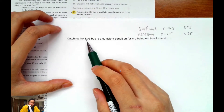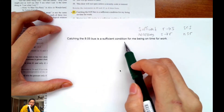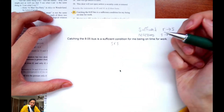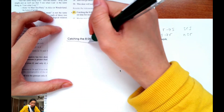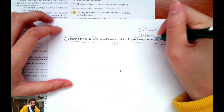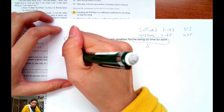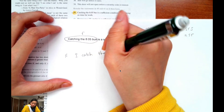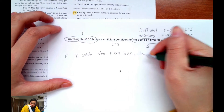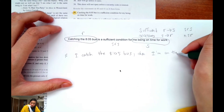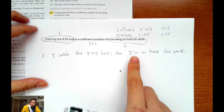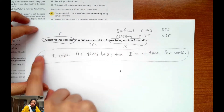Here they say: catching the 805 bus is a sufficient condition for me being on time for work. Sufficient means SRS — r implies s. So catching the bus is r, and me being on time for work is s. Therefore: if I catch the 805 bus, then I'm on time for work. That is this sentence in if-then format.